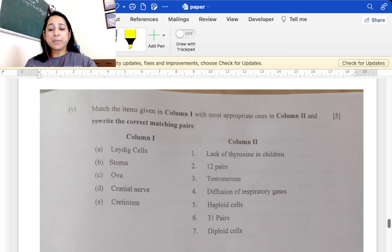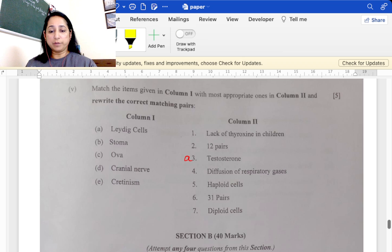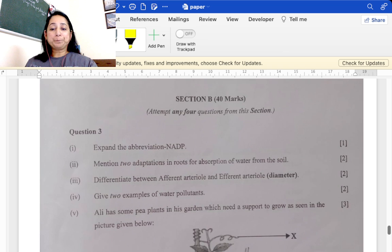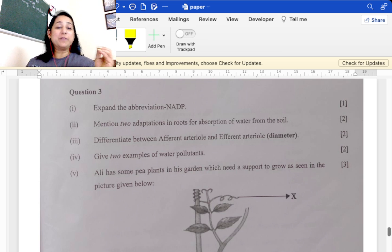Match the following: Leydig cells related to production testosterone, option A. Stoma for diffusion of gases, also known as stomatal pore. Cranial nerves are 12 in pair. Cretinism is due to lack of thyroxine in children. Ova, haploid cells. Expand the abbreviation NADP: nicotinamide adenine dinucleotide phosphate.